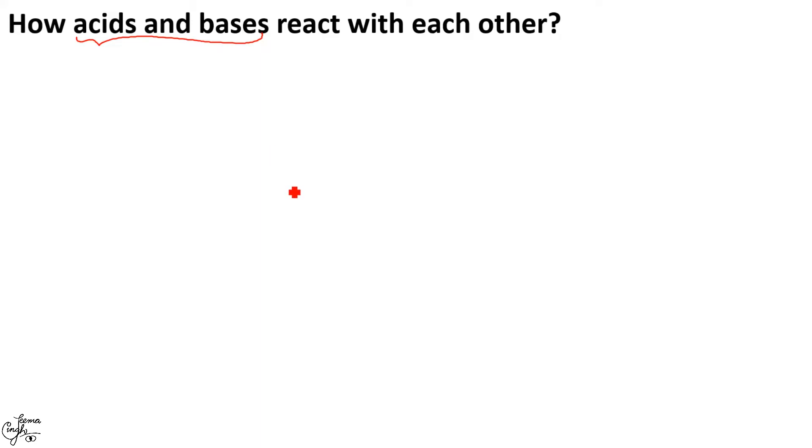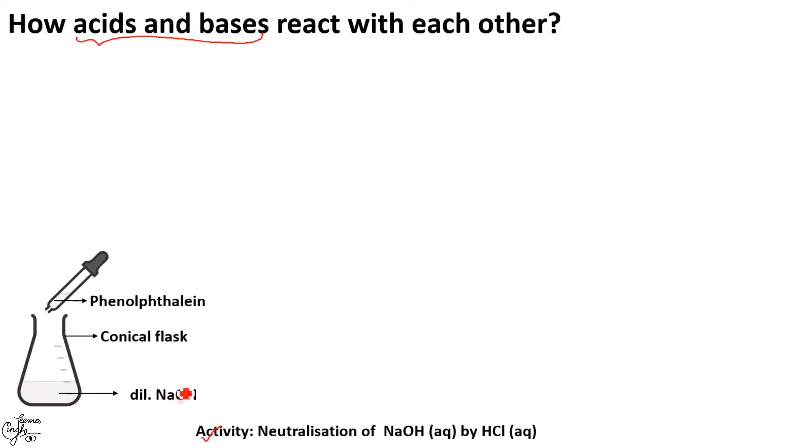And this neutralization can be understood by observing the color change of indicators such as phenolphthalein. Let me explain this with the help of an activity where we will study the neutralization of sodium hydroxide by hydrochloric acid. Remember, both of them have to be in aqueous form, that is, they have to be dissolved in water. For this activity, you're supposed to take a conical flask and add little amount of sodium hydroxide solution. To this solution, you're going to add 1-2 drops of phenolphthalein.